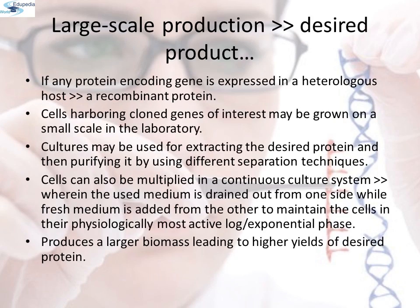Large-scale production of the desired product: after cloning the gene of interest and optimizing conditions to induce expression of the target protein, one must consider producing it on a large scale. If a protein-encoding gene is expressed in a heterologous host, it is called a recombinant protein. The cells harboring cloned genes may be grown on a small scale in the laboratory, and the desired protein extracted and purified using different separation techniques. Cells can also be multiplied in a continuous culture system where used medium is drained from one side while fresh medium is added from the other, maintaining cells in their physiologically most active log or exponential phase. This produces a larger biomass, leading to a higher yield of desired proteins.